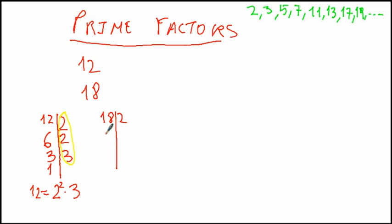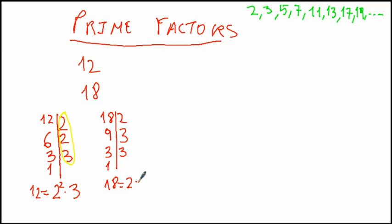18: we can divide 18 by 2 and the result is 9. We can't divide 9 by 2 again, so we have to take the next prime, which is 3. 9 divided by 3 is 3.